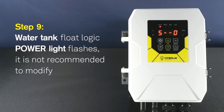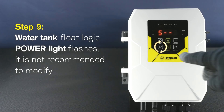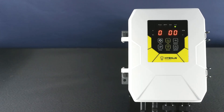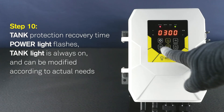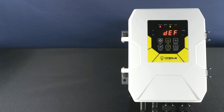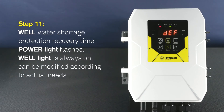Step 9: Water tank float logic. Power light flashes; it is not recommended to modify. Step 10: Tank protection recovery time. Power light flashes, tank light is always on, and can be modified according to actual needs. Step 11: Well water shortage protection recovery time. Power light flashes, well light is always on, and can be modified according to actual needs.